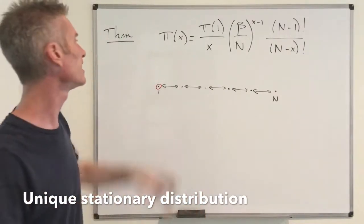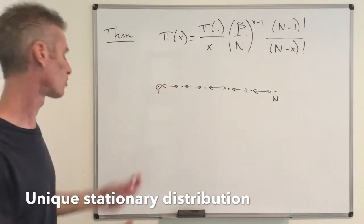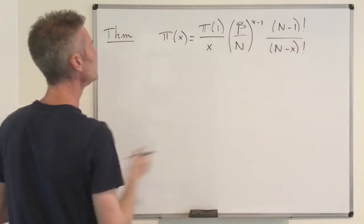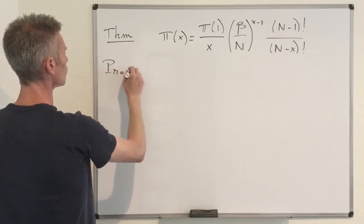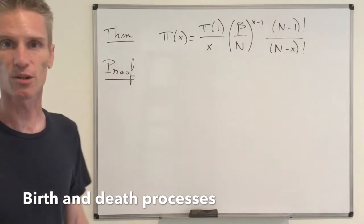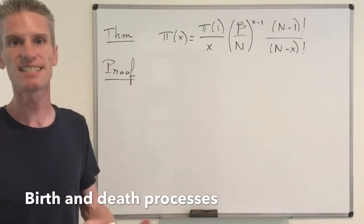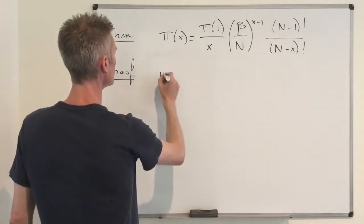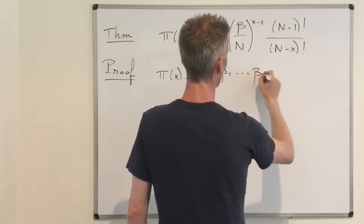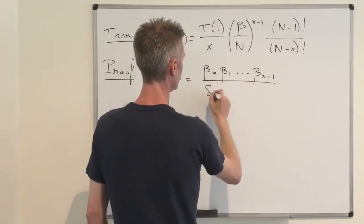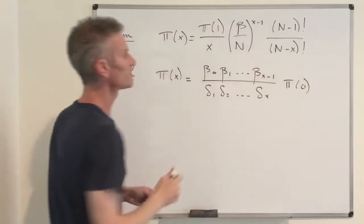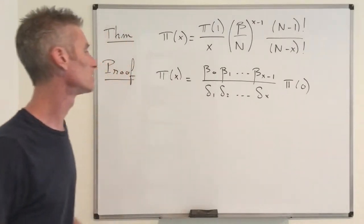So now how can we prove that this stationary distribution satisfies this equation? For that I'm going to use a result that we saw before about general birth and death processes. We saw that if you have a birth and death process, then in case the stationary distribution exists and is unique, it's characterized by the following equation: pi(x) equals beta_0 times beta_1 ... times beta_{x-1} divided by delta_1 times delta_2 ... times delta_x, times pi(0). That's a result I proved in a previous playlist about birth and death processes.